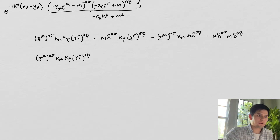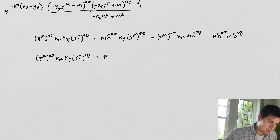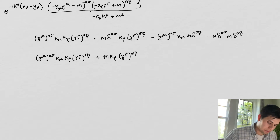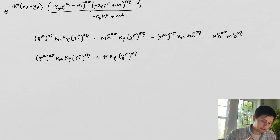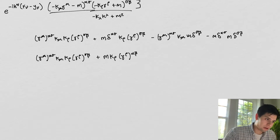The delta functions are going to collapse our indices. So we're going to get plus m k_rho gamma^rho_{alpha beta}, because the sigma is going to go away with the delta — whenever alpha and sigma are the same it's one, and whenever they're different the whole term goes to zero. We can do the same thing for the other term.